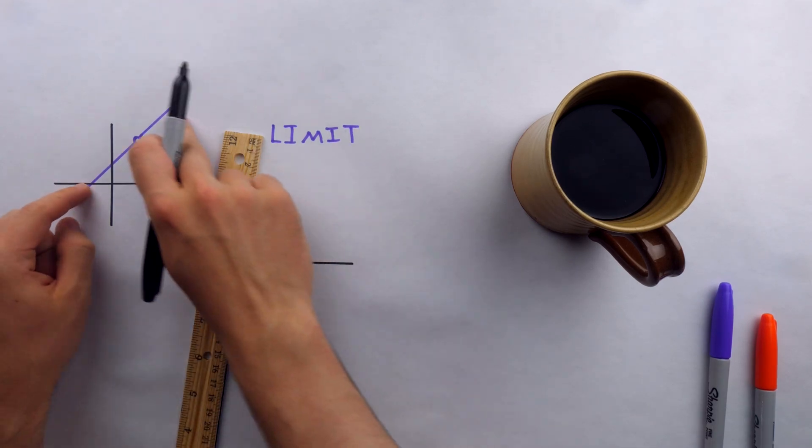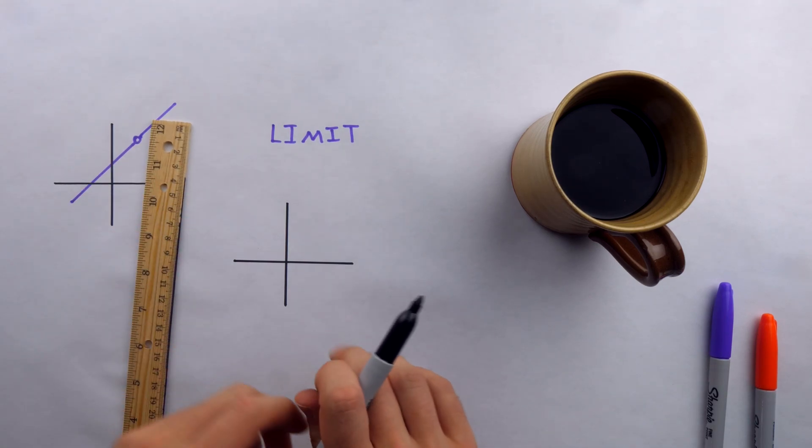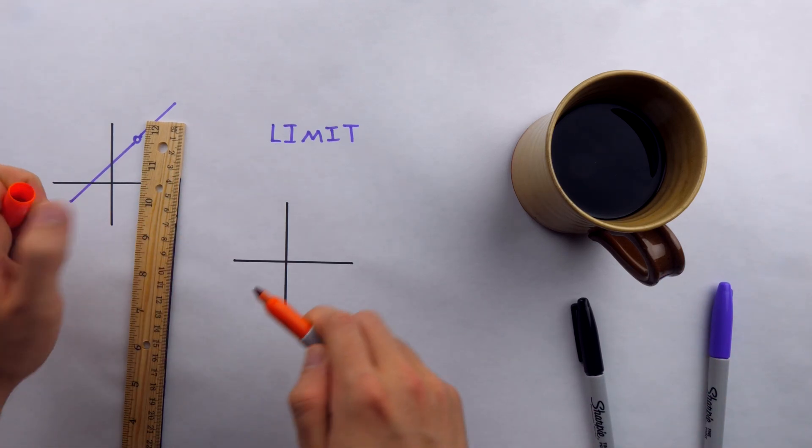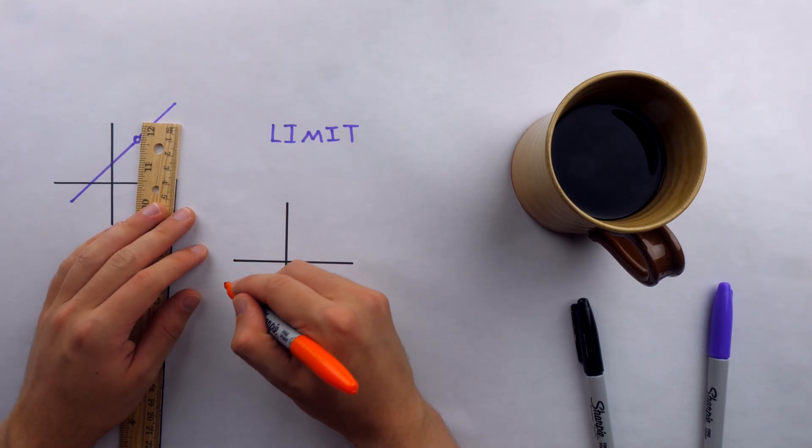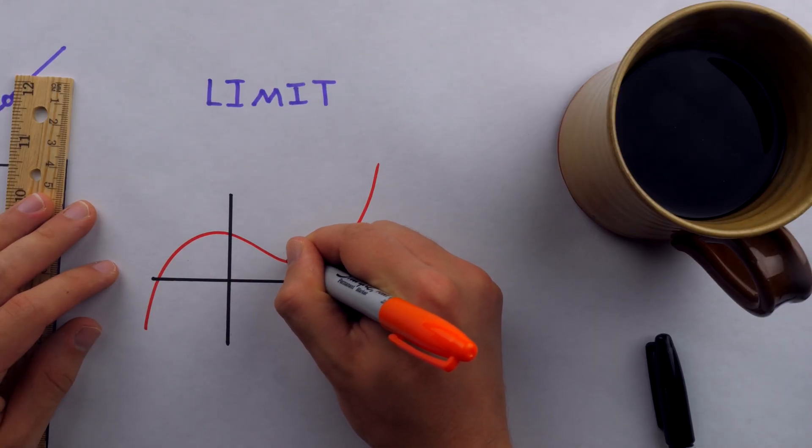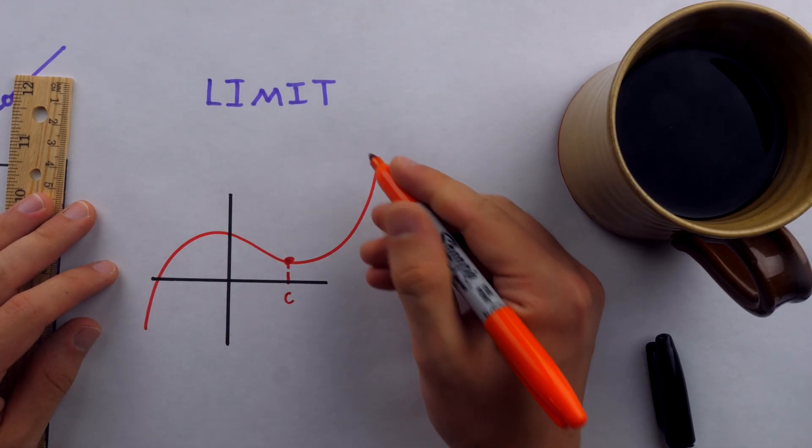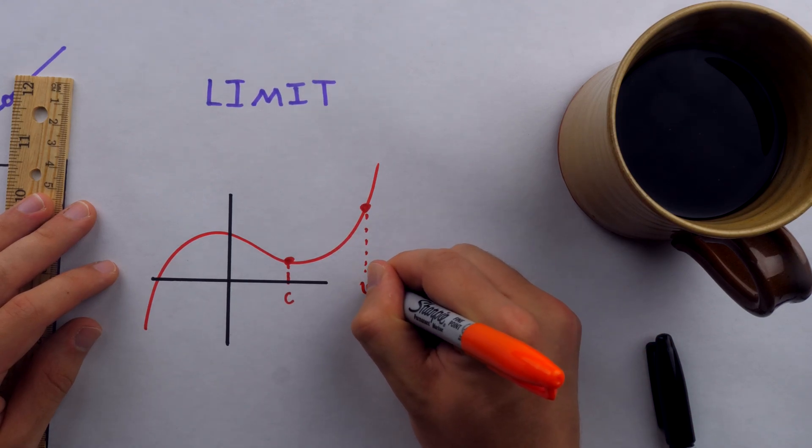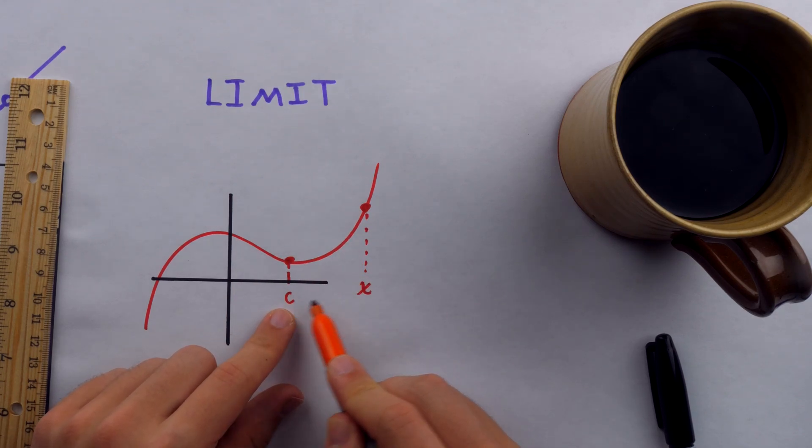Before we talk about what the limit has to do with this line with a hole in it, although this is a useful example, it's true that it is a bit contrived. And so I'd like to show you a more natural situation, both historically and just in terms of general applications, where the limit shows up. So imagine we have a function, something like this. You could imagine I have a point on this function. Let's say that the x coordinate of this point is c.